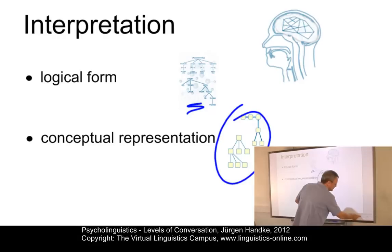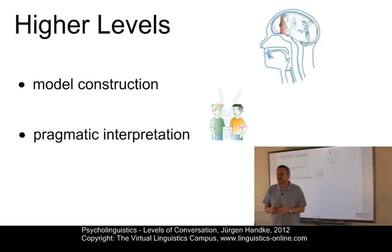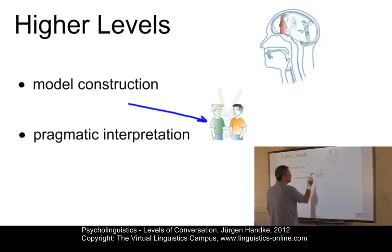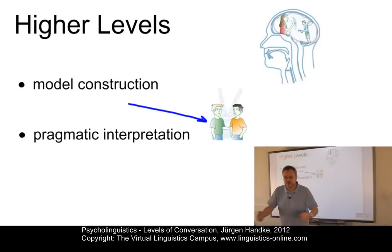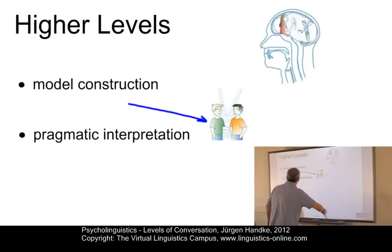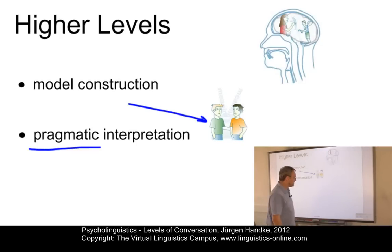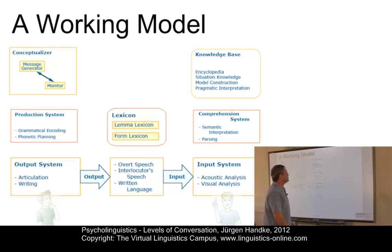But this is not the end of the story — we still have higher levels, well beyond the scope of the central linguistic levels. One such level is called model construction, where you construct a model about the person you are talking to — a model of the interlocutor — and a model of the situation in which you perform your activities. Another level is concerned with pragmatics, where you determine the communicative intention of an utterance.